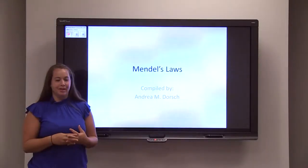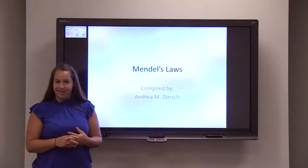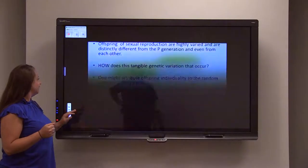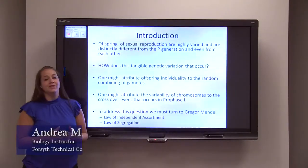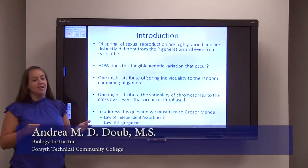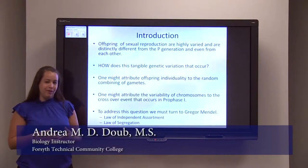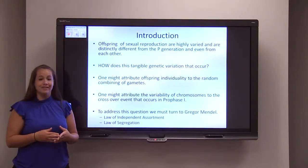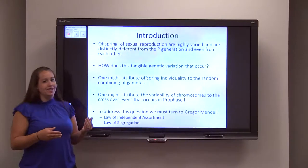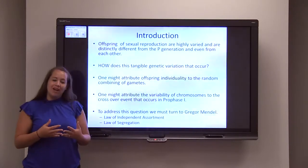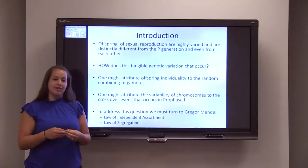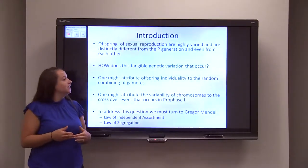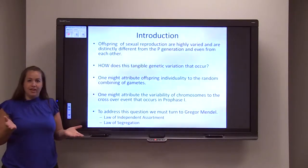Now we're going to dive into Gregor Mendel and his laws that he created to explain some of the genetic variation that occurs from offspring to offspring. The offspring that result from sexual reproduction are highly varied. We talked earlier about prophase one and the crossover effect that happens when two chromosomes are in physical contact with one another. But this variation doesn't explain how exactly offspring are so genetically varied, not only from their parents but even from each other in the same generation. So how does this genetic variation occur?